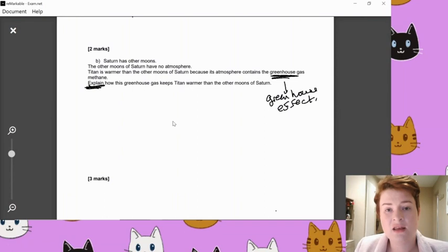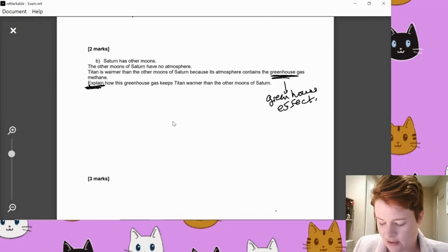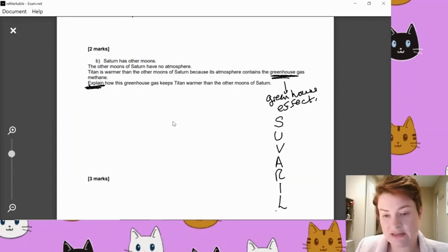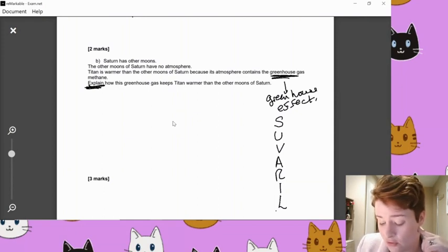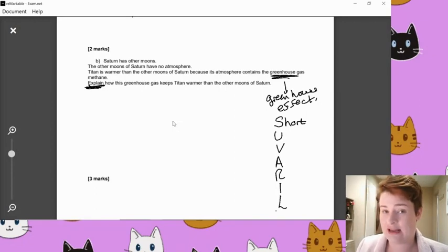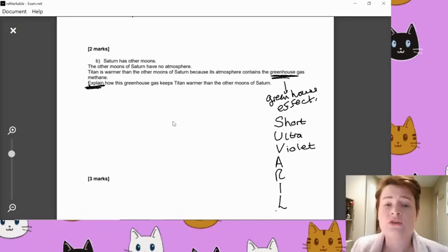So the greenhouse effect. So we have that little silly kind of memory thing to help you, in theory, try to remember this. Short, ugly, violet, always really irritates Lucy. Short, ugly, violet, always really irritates Lucy. In temper tantrums, if you could be bothered to include that as well. So the short bit stood for short. So short waves of radiation, not just heat or light. Lots of you were writing about heat and light. It's not good enough. It's not heat and light that we're getting. It's short waves of radiation, the shorter waves being ultraviolet.